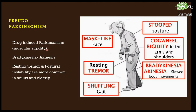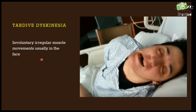Next is pseudo-Parkinsonism, or drug-induced Parkinsonism. You can see muscular rigidity, bradykinesia or akinesia, resting tremor, and postural instability, which are more common in adults and elderly. You can see in this picture a stooped posture and corporeal rigidity in the arms and shoulders, bradykinesia or akinesia with slowed body movements, shuffling gait instability, resting tremor in the arms and legs, and a mask-like face.